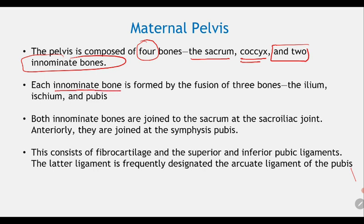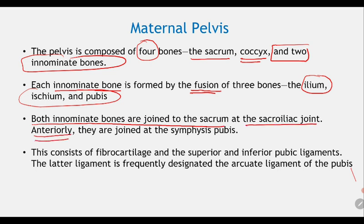Each innominate bone is formed by the fusion of three bones: the ilium, ischium, and pubis. Both innominate bones are joined to the sacrum at the sacroiliac joint, and anteriorly these two innominate bones join at the level of the pubic symphysis. This consists of fibrocartilage and the superior and inferior pubic ligaments.